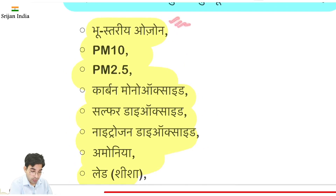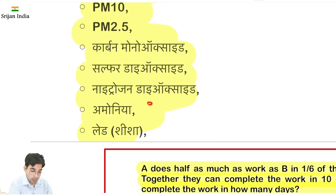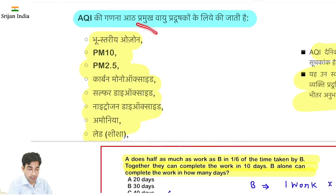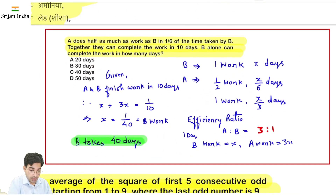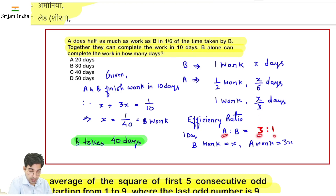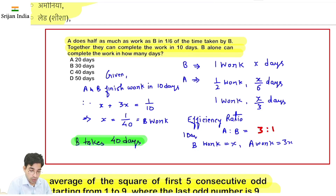AQI — Air Quality Index — daily vayu ki gunvatta batata hai, color-coded hota hai taaki layman bhi samjhe. Isme 8 pollutants hote hain jinke naam yaad hone chahiye — MCQ ban sakta hai: ground-level ozone, particulate matter PM10, PM2.5, carbon monoxide, sulfur dioxide, nitrogen dioxide, ammonia, aur lead. CSET mein ek correction: A is thrice as efficient as B, toh ratio 3 is to 1 hai (not 1 is to 3) — A ka work 3X hoga, B ka work X hoga. Rest is good.